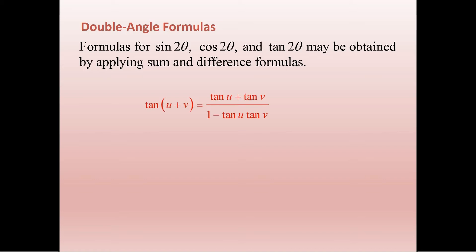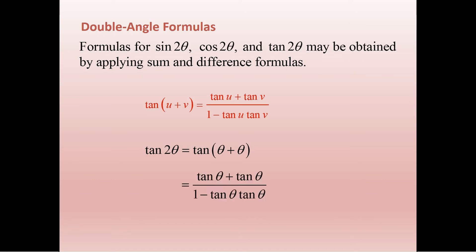Tangent is exactly the same thing. We do 2 theta — that's just theta plus theta — so you end up with tan theta plus tan theta over 1 minus tan theta tan theta, or 2 tan theta over 1 minus tan squared theta. So here we have three new formulas, but as long as we know our sum and difference formulas, we can derive these in just a few seconds.